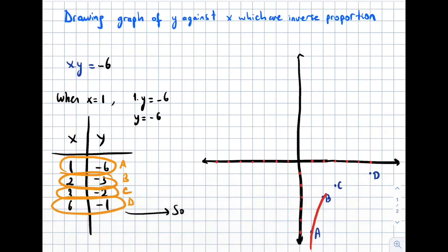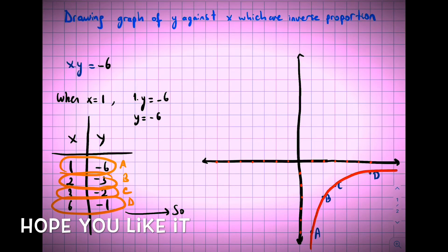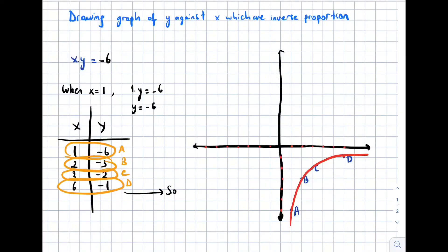Also x can get negative values: minus 1, minus 2, minus 3, minus 6. I'm just picking whole numbers close to the origin because I would like to draw a nice and smooth graph.